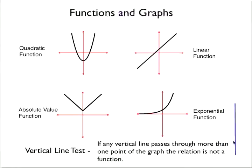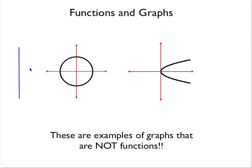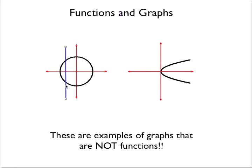So each of these indeed are functions. However, if we take a look at a couple that might not be functions — we have a graph of a circle and a graph of a sideways parabola, which is the graph of y equals the square root of x. If I pass my vertical line through each of these graphs, the vertical line hits the circle at two spots, which automatically tells me the circle is not a function. Just like the circle, the sideways parabola also hits the vertical line at two spots. All it takes is one spot on the graph where the vertical line hits two points, and it's not a function.